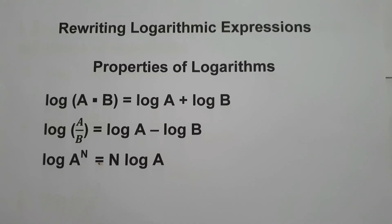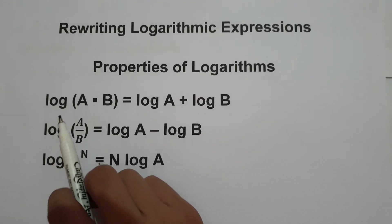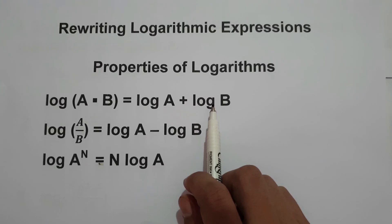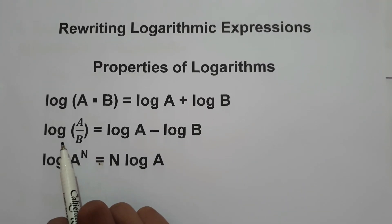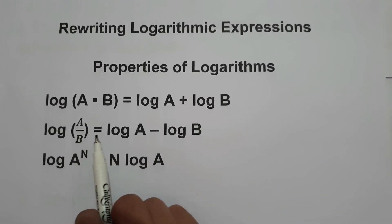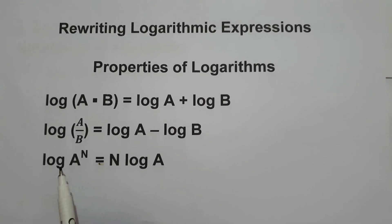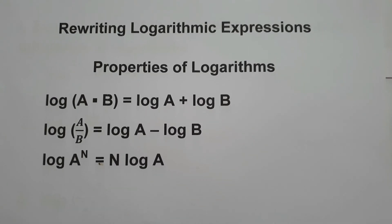What are the different properties that we need to understand in order to rewrite logarithmic expressions? Number one, we have log(ab) = log a + log b. Number two, log(a/b) = log a − log b. And number three, log(a raised to n) = n log a. These are the different properties we need to understand in order to rewrite logarithmic expressions.